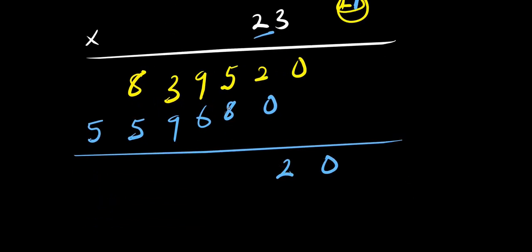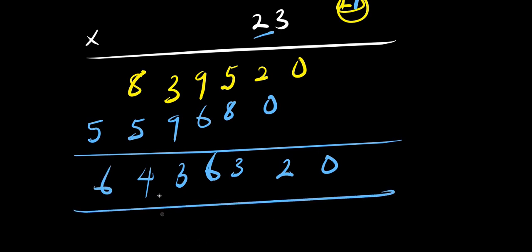Adding the rows: 0, then 3 carry 1 add here becomes 16 so write 6 carry 1, that becomes 13 so write 3 carry 1 add here, this gives 14 so write 4 carry 1, that is 6. So the digits are 6, 4, 3, 6, 3, 2, 0 — giving us 6,436,320. So this becomes the answer without a calculator.